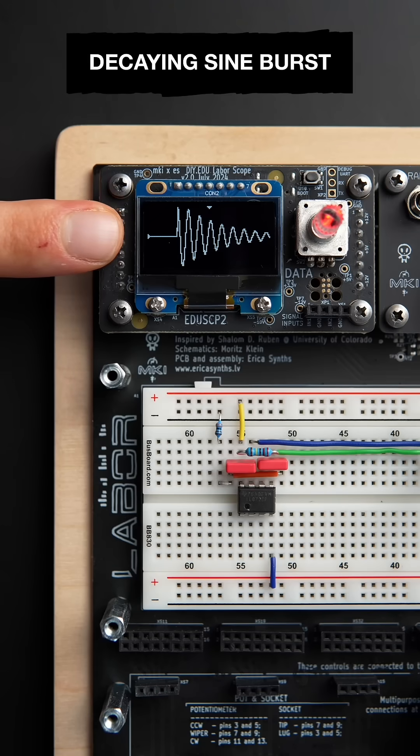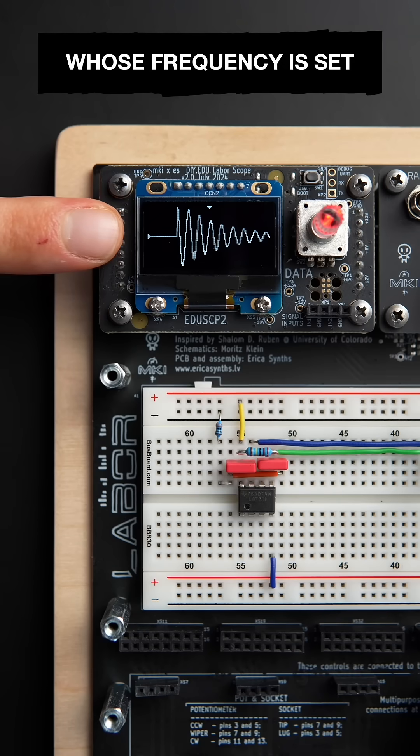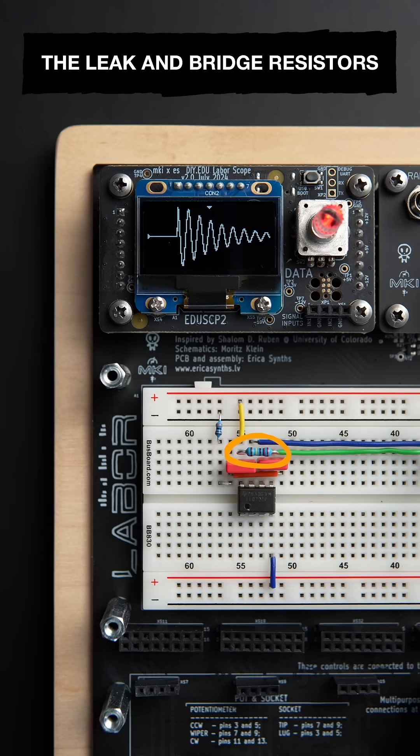At the output, this creates a decaying sine burst, whose frequency is set by the relation between the leak and bridge resistors.